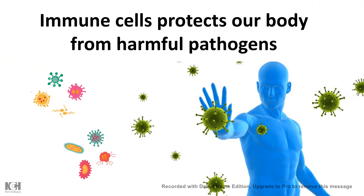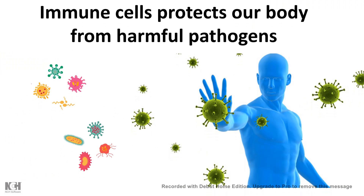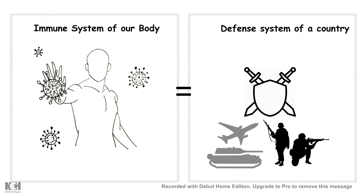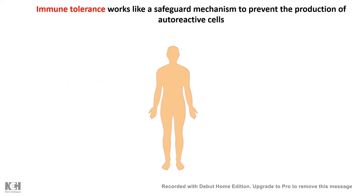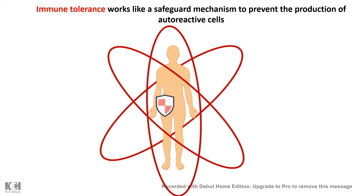Our body's immune system protects us from all kinds of harmful pathogens. We can compare our immune system to the defense system of our country, which protects us at all cost. In order to prevent any kind of autoreactive or self-destructive events, our immune system has a tolerance mechanism, which is a safeguard mechanism protecting our body from autoreactive cells and autoimmunity.